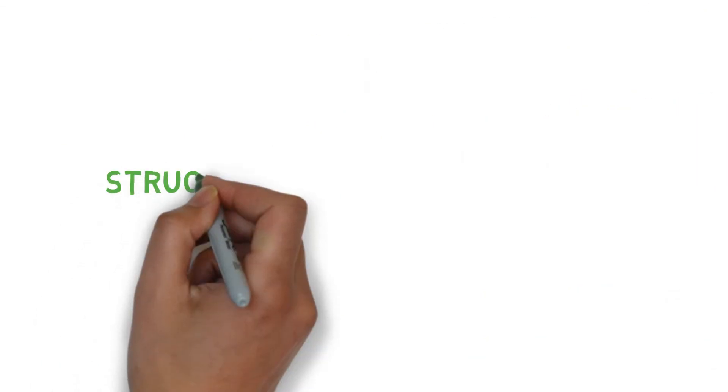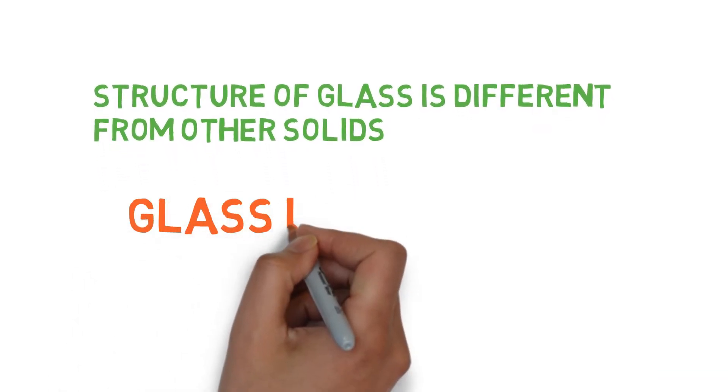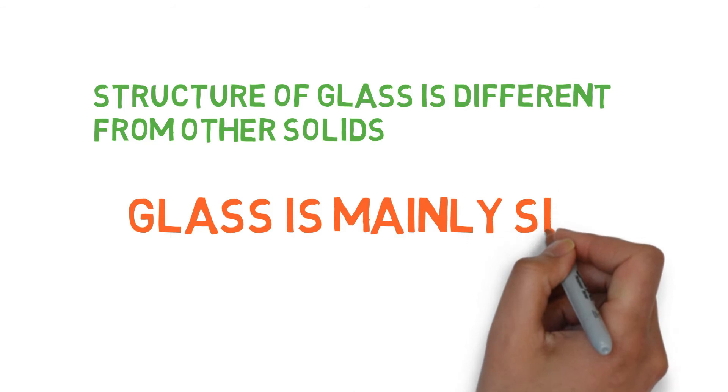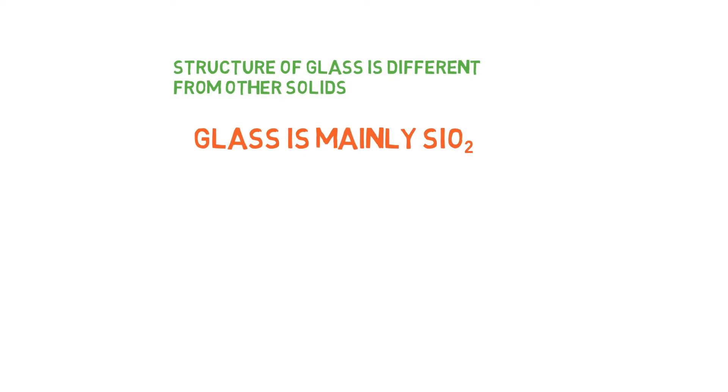The structure of glass is different from other solids. Glass is mainly made up of silicon dioxide, SiO2. There are two types of solid: one is a crystalline solid and the other is the amorphous solid.